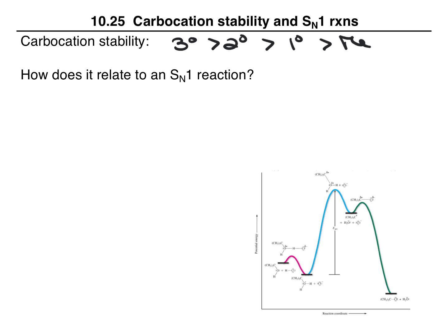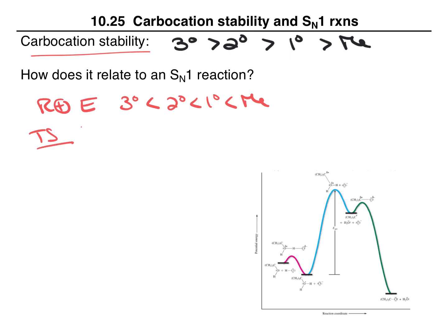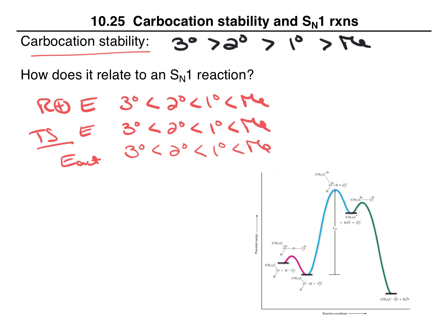How does this relate to an SN1 reaction? For an SN1 reaction, it is carbocation formation that is the rate-determining step. The energy of a tertiary carbocation is lower than secondary, lower than primary, lower than methyl. The transition state leading to a tertiary carbocation is lower energy than secondary, lower than primary, lower than methyl. So the resulting activation energy for tertiary is lower than secondary, lower than primary, lower than methyl, and the rate of a tertiary will be faster than secondary, faster than primary, faster than methyl. It is the carbocation stability that essentially determines the rate of the reaction.